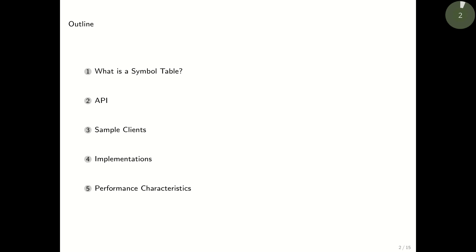Hi, welcome to this lecture on symbol tables. Here's the outline: we'll first talk about what a symbol table is — basically a data structure that maps keys to values. Then we'll discuss the API, sample client programs, two implementations of the symbol table API, and compare their performance characteristics.